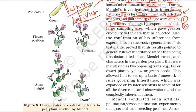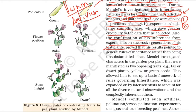His experiments had a large sampling size, which gave greater credibility to the data that he collected. The confirmation of his inferences from experiments on successive generations of his test plants pointed to general rules of inheritance rather than being unsubstantiated ideas.